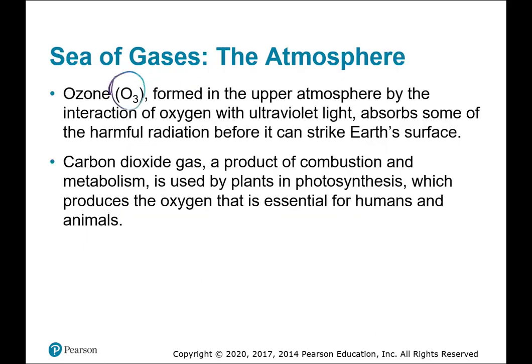Ozone, O3, formed in the upper atmosphere by the interaction of oxygen with UV light, absorbs some of the harmful radiation before it can strike Earth's surface. Carbon dioxide gas, a product of combustion and metabolism, is used by plants in photosynthesis, which produces the oxygen that is essential for humans and animals.